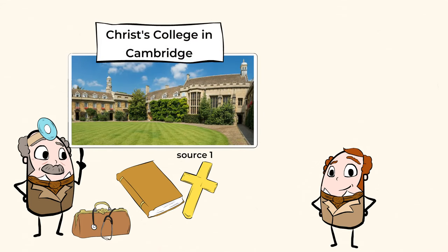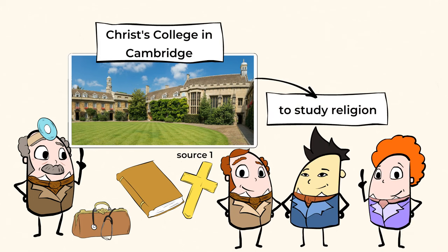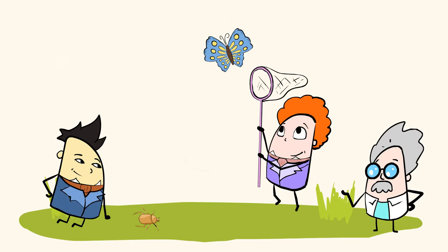So Darwin enrolled in Christ's College in Cambridge to study religion. There he became friends with others who were very interested in nature, science, and different species. At that time, it was quite popular among students to collect beetles or butterflies.